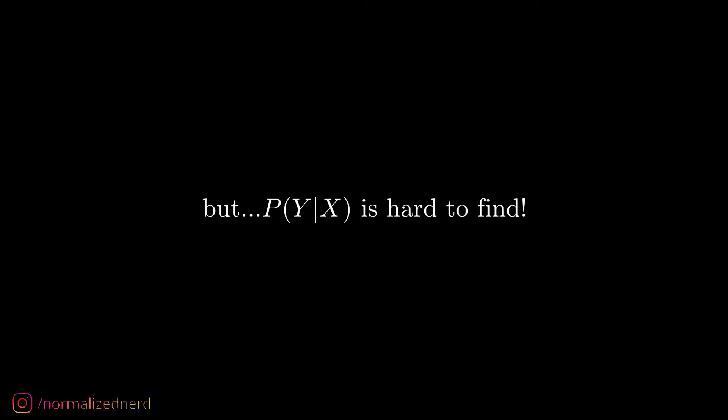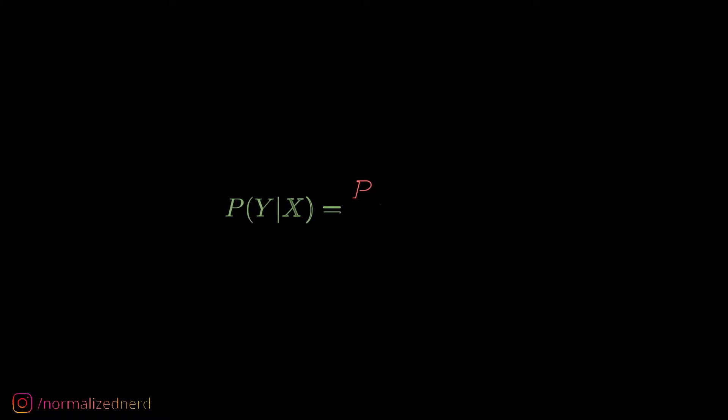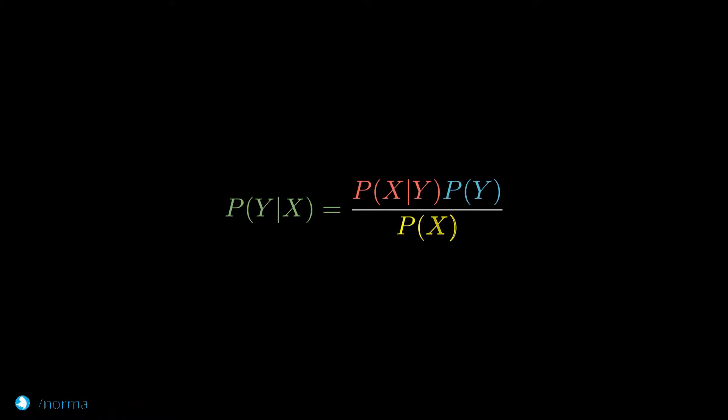To tackle this problem, we use Bayes Theorem. This is the Bayes Theorem. It says that the probability of y given x, which we want to find, is the same as the probability of x given y, times the probability of y, divided by the probability of x. Everything on the right-hand side of this equation can be found from our dataset.